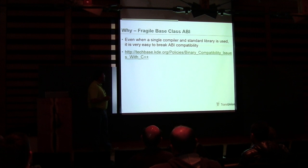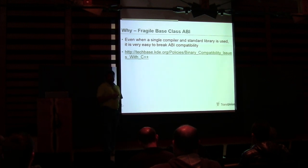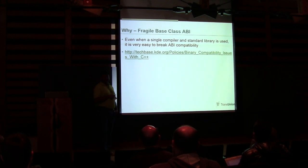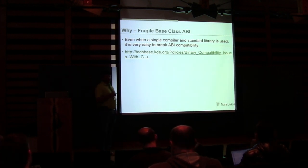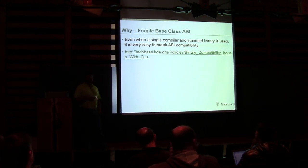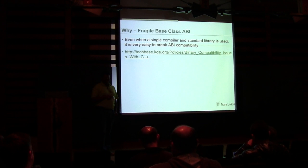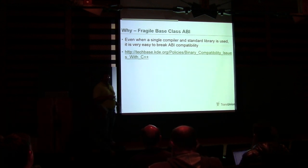Even if you decide to stick with a single compiler and a single standard library, it's still very easy to break ABI compatibility. KDE maintains a list of what you can and cannot do to maintain ABI compatibility across versions. Along the same line, the next compiler version may or may not have the same ABI. On Windows, Microsoft makes a point that different versions are not ABI compatible. Even in GCC there's the issue with std::string — the current libstdc++ is a reference-counted implementation, but C++11 explicitly disallows that, so when that change happens there's going to be a huge amount of ABI breakage for everybody that uses std::string.